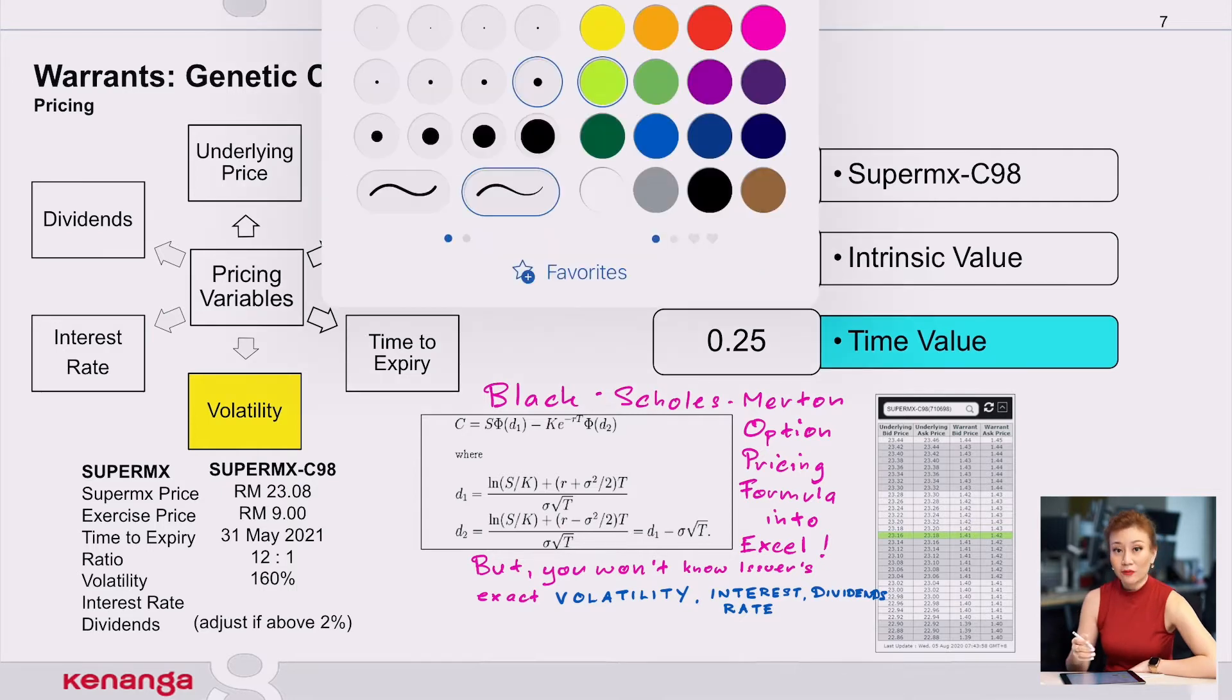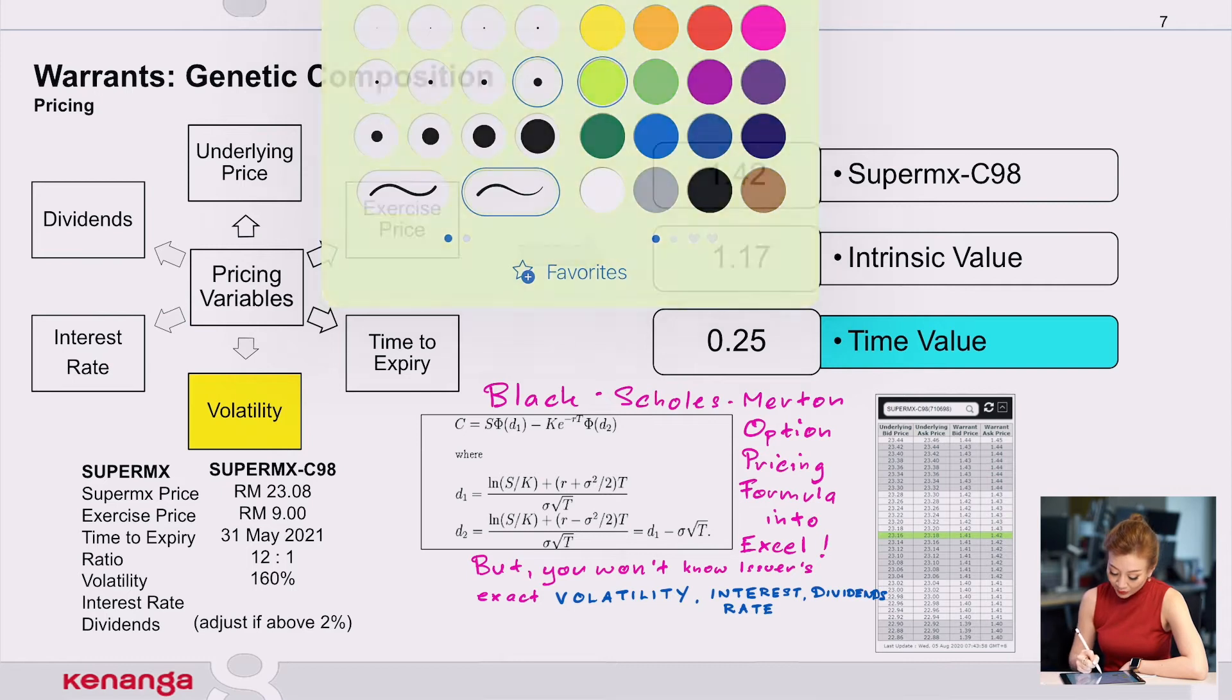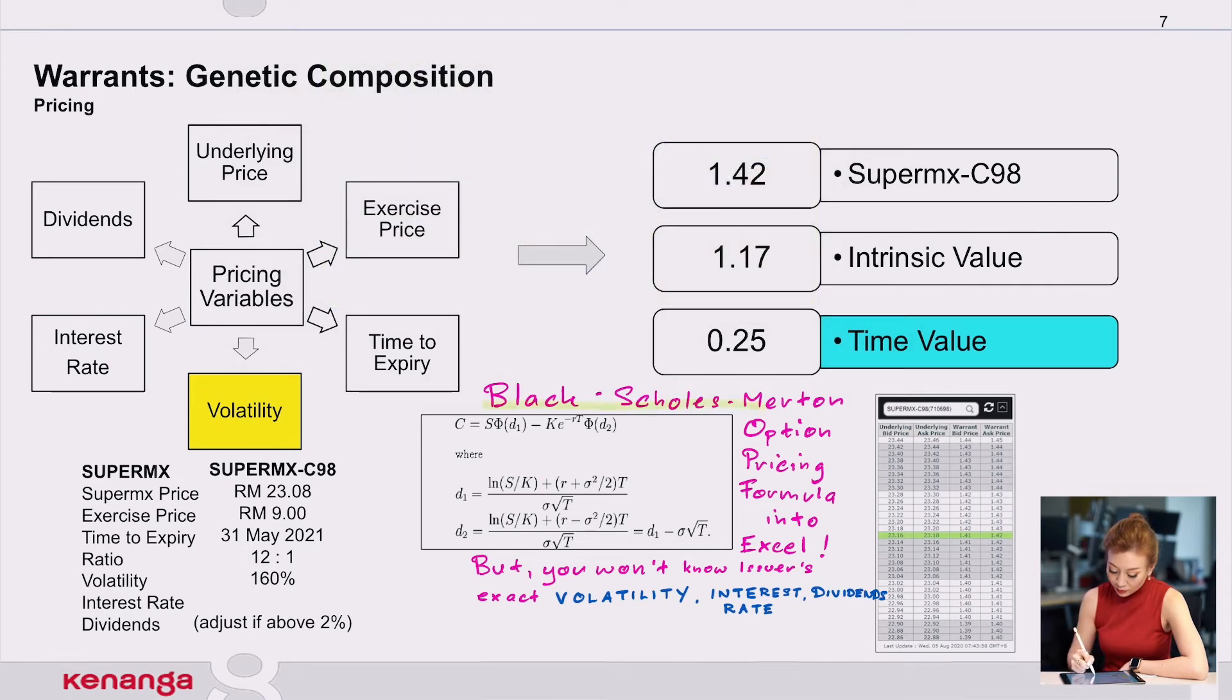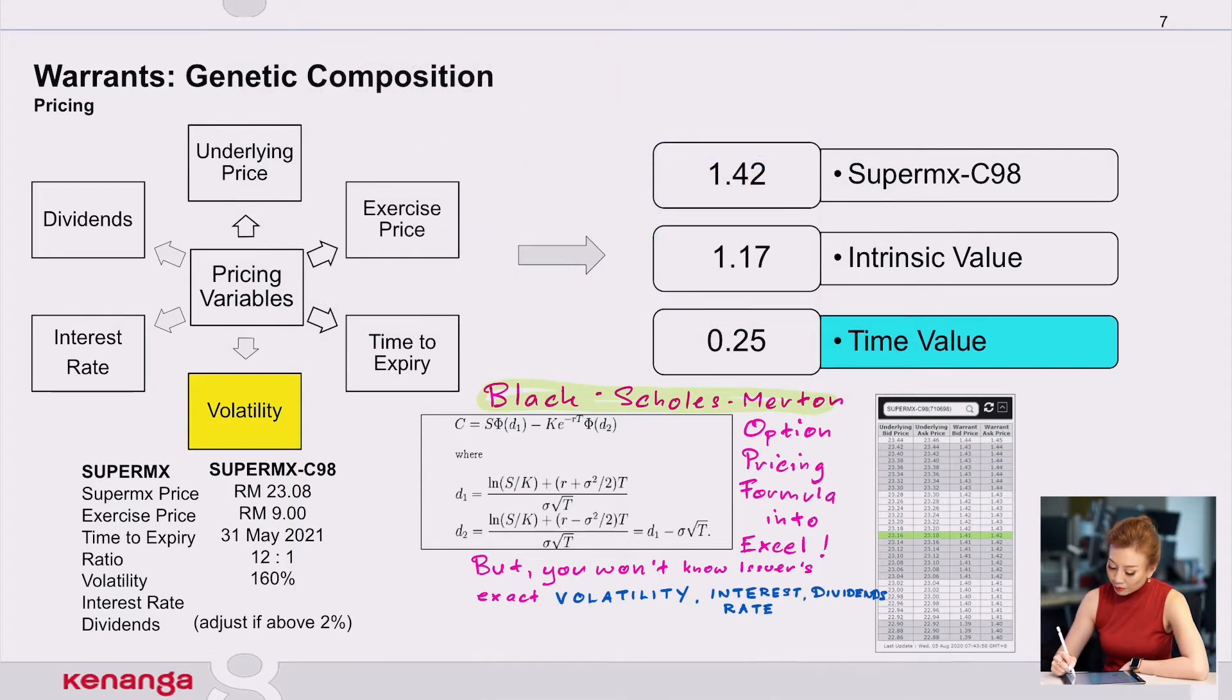You can check it out online, you can Google it right now if you want. Most issuers use the Black-Scholes-Merton option pricing formula, or they use the binomial trinomial formula, which you can get all online. You can dump it into your own Excel spreadsheet and calculate yourself. But the problem with this is you don't actually know three key components to this six ingredient cake.